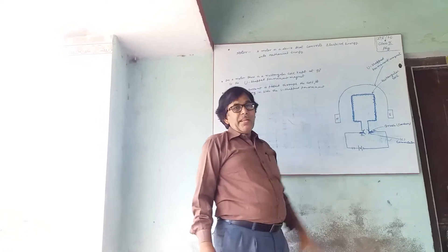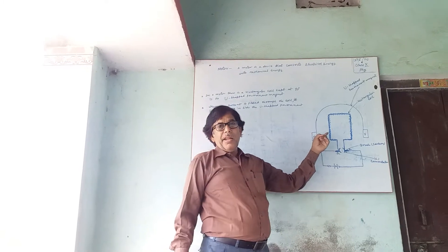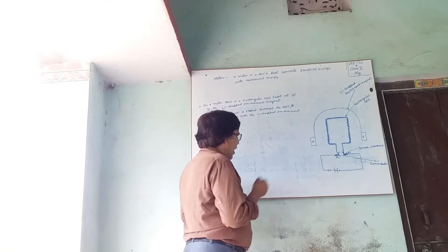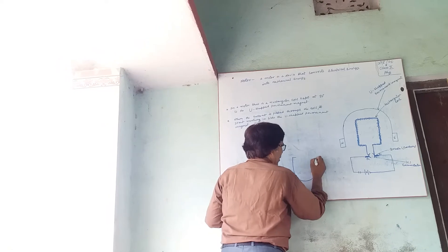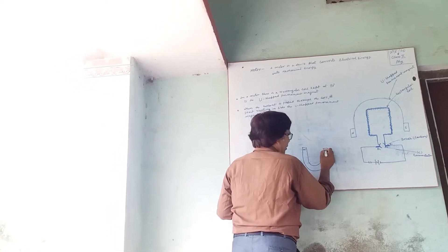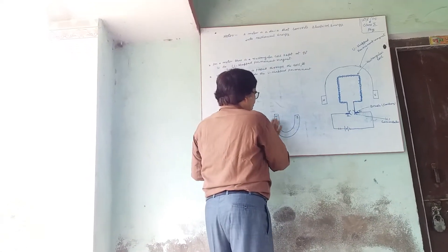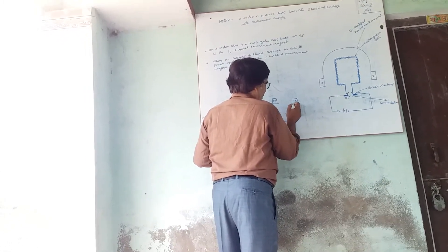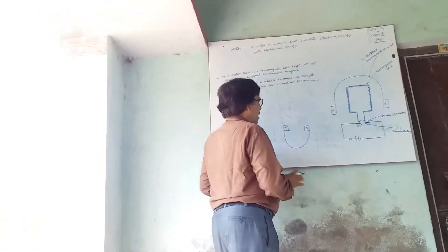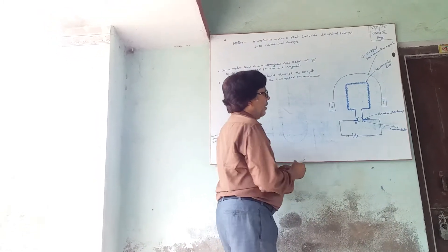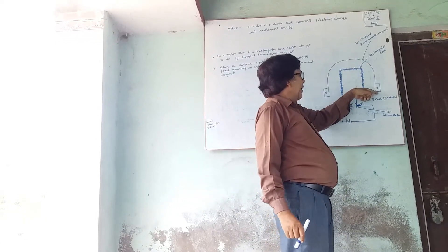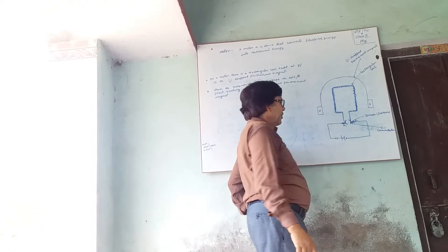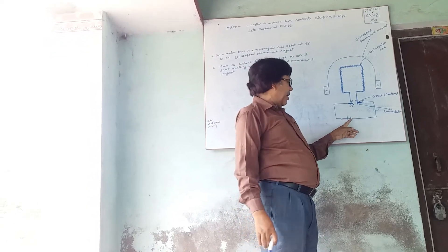A simple sketch of an electric motor is shown. In this electric motor, you will see a U-shaped magnet. It is a permanent U-shaped magnet, and there is a rectangular coil which is connected to a circuit containing two cells.